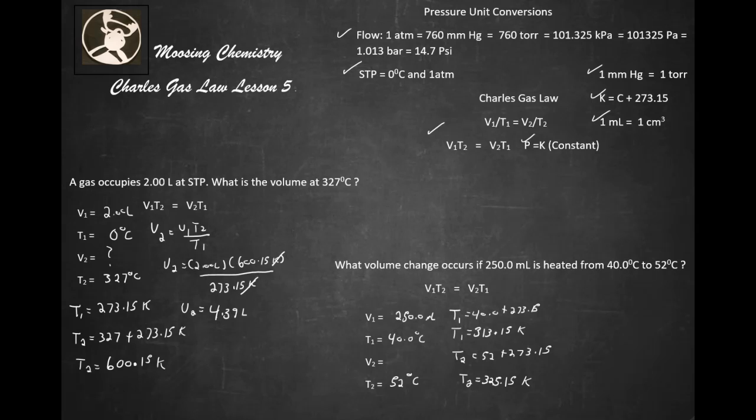All right, now isolate for V2. So V2 equals V1 T2 over T1. V2 equals, of course, 250 milliliters times our T2 temperature, which was 325.15 K, divided by our T1 temperature, of course, which was 313.15 K. K's cancel out.